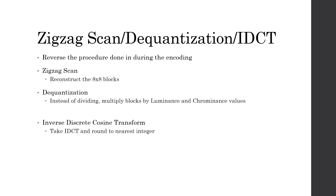Next, we redo the zigzag scan by placing the list of values back into 8x8 blocks. Then we take the dequantization values by multiplying the blocks by the luminance and chrominance values that we divided by during encoding. Finally, we take the inverse discrete cosine transform and round to the nearest integer.